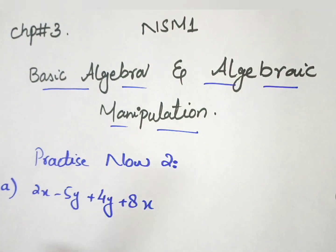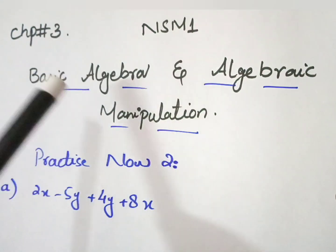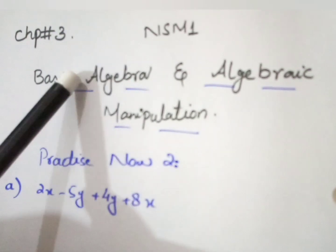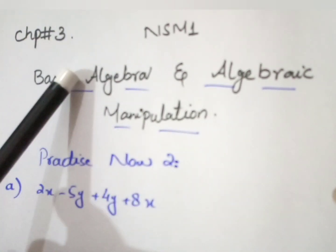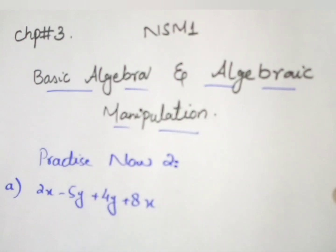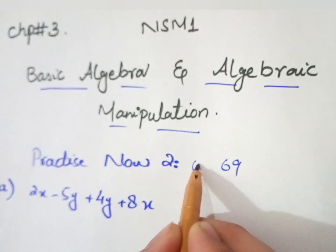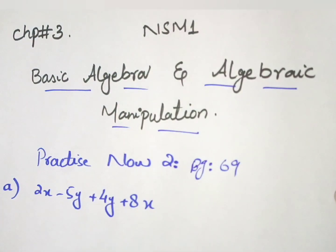Assalamu alaikum to everyone, welcome back to Mathematics Points. Today we'll do Chapter 3 NSM1, Basic Algebra and Algebraic Manipulation — that is Chapter 3 in the new books and Chapter 4 in old books. In the new book it is on page 69, whereas in the old one it is on page 90.